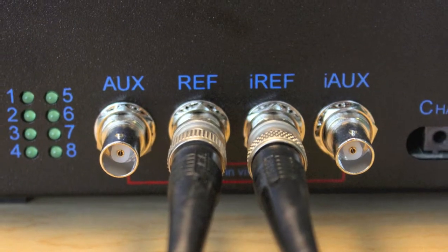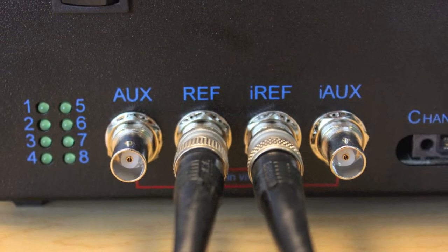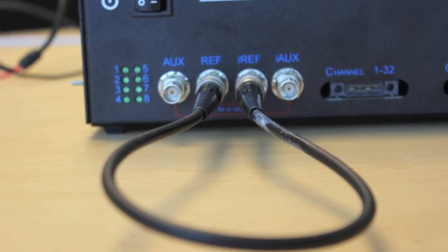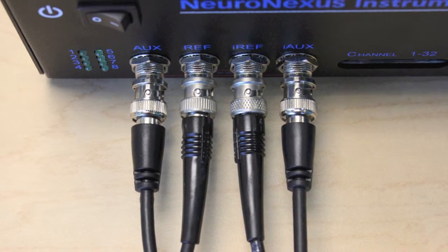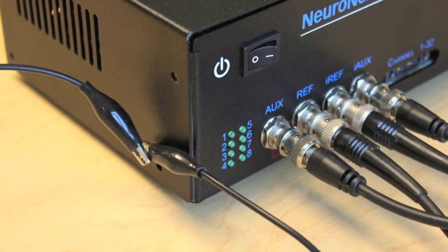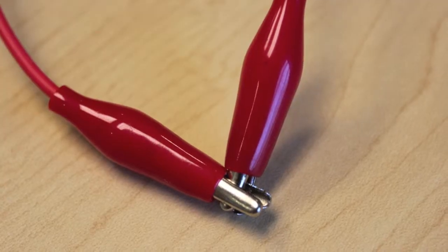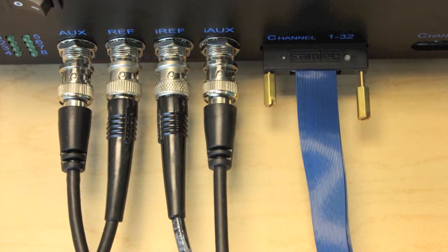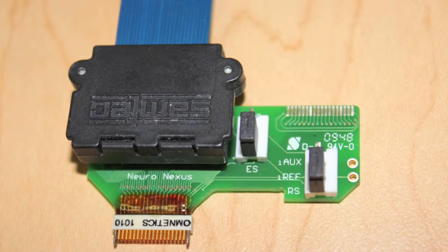You can use a BNC to BNC connector to short the REF and IREF pins. Use BNC to alligator connectors for the AUX and IAUX by clipping the black ends to the Nipod body and by clipping the red pins to each other. Then plug the blue cable into the 1-32 slot and onto the probe adapter.